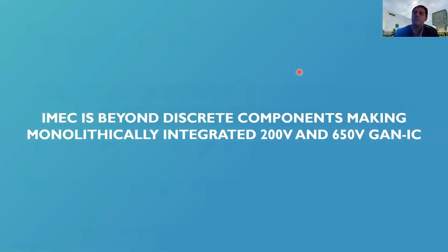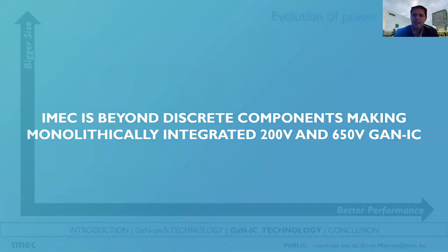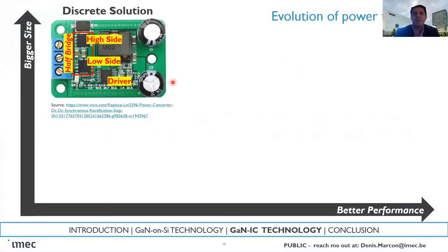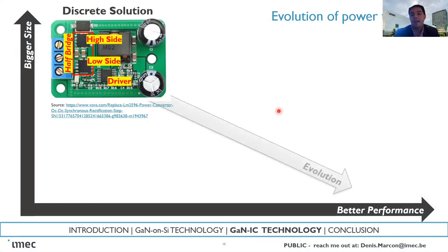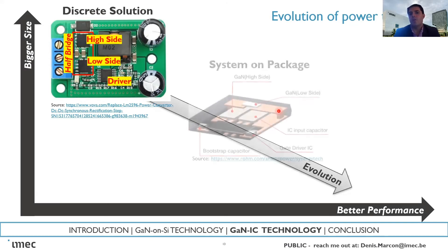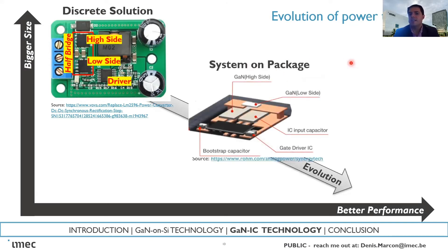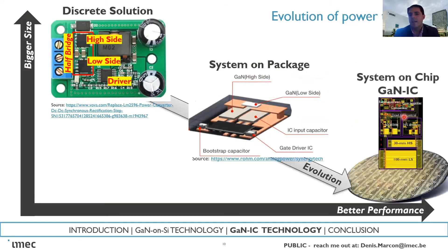So far I have shown you the discrete component made on GaN — with discrete components you can enable power converters more compact than silicon, but they are still made of discrete parts. For example, a half-bridge with high side, low side, driver — all on discrete dies. There is an evolution toward smaller, more compact solutions, such as a system-in-package with high side, low side transistor and gate driver in one package. But according to us, the way to go is a system-on-chip — putting all these components into one chip.